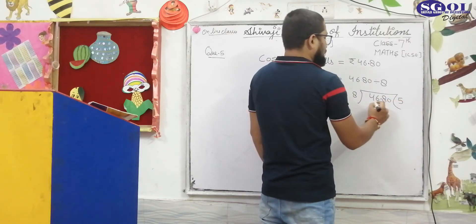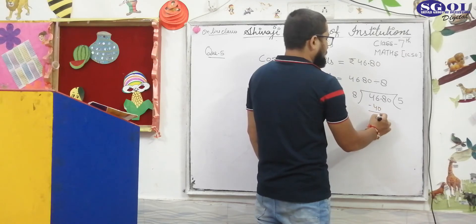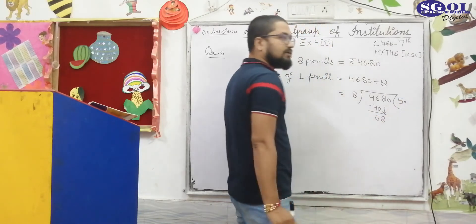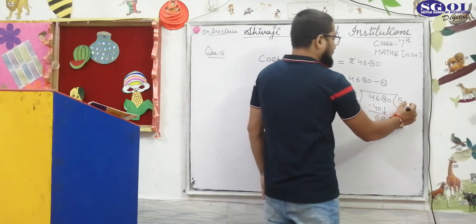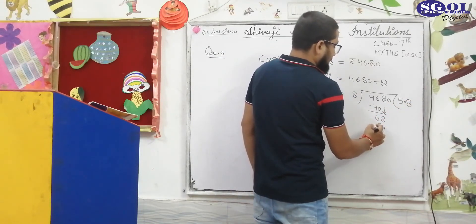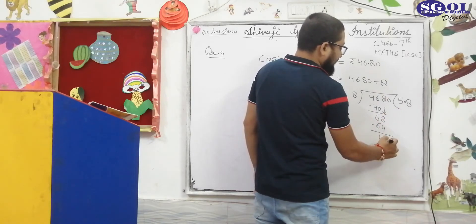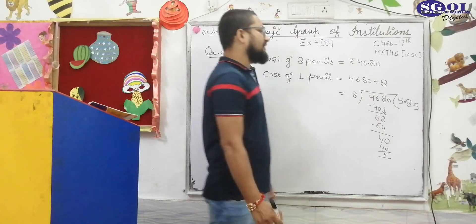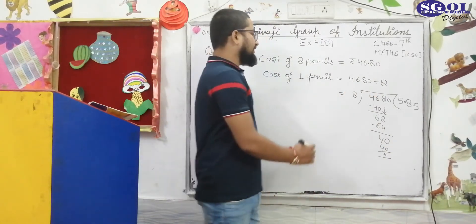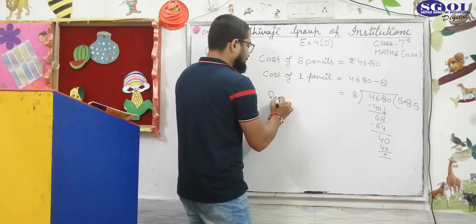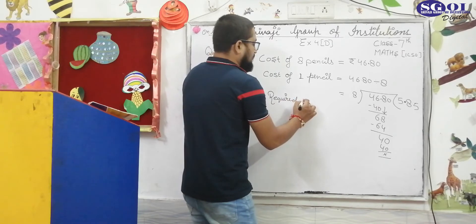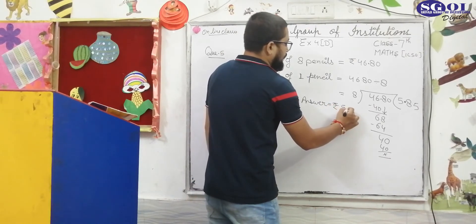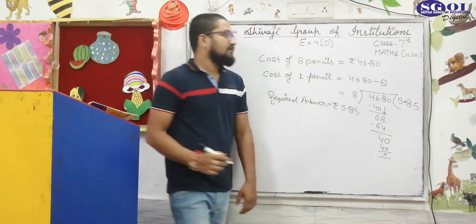It will be 8 into 5 is 40. The quotient digit is 6. We carry the value after the decimal, so we place the decimal in the answer here. Then 8 into 8 is 64. Subtract to get 4. Bring down the next value: 40. Then 8 into 5 is 40. So from here you have got the answer equal to 5.85. The required answer is equal to rupees 5.85.